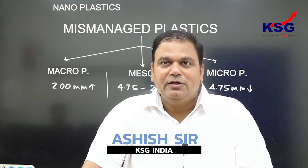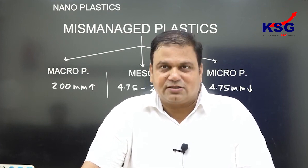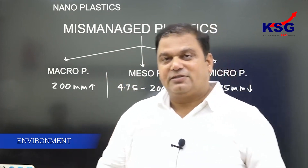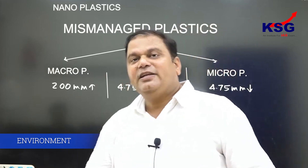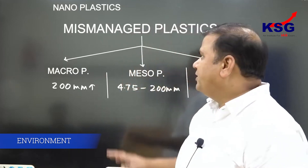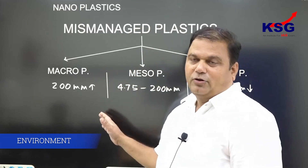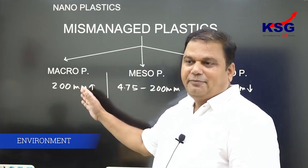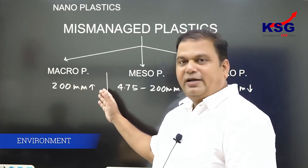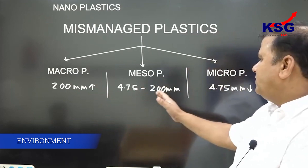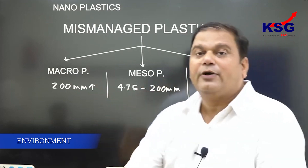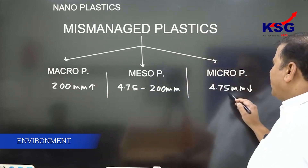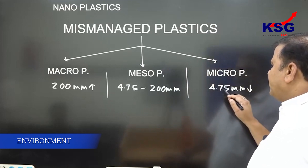That's the issue of nanoplastics. When we talk about mismanaged plastics, it can be divided into three broad categories: macro plastic, which has a diameter of more than 200 mm; mesoplastic, which has a diameter between 4.75 to 200 mm; and micro plastic, which has a diameter of less than 4.75 mm.